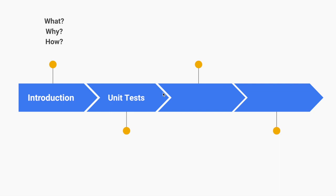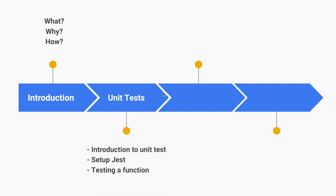In the second chapter on unit test cases, we will have an introduction to unit testing. Since we are going to use Jest, we will see how to set up Jest in our React Native project. After that, we will write test cases and test functions using unit tests.